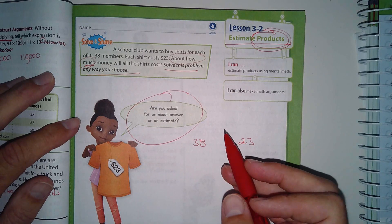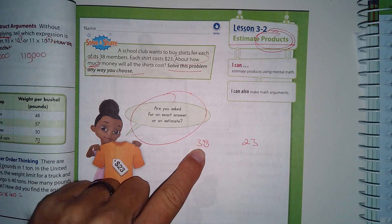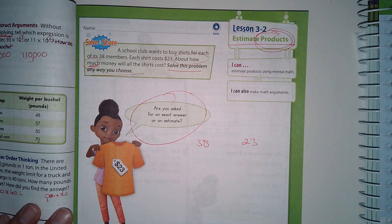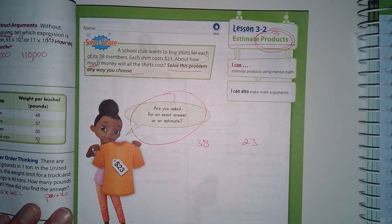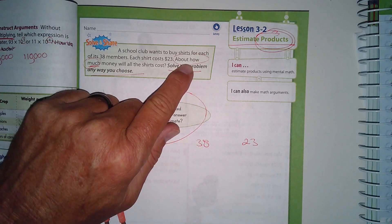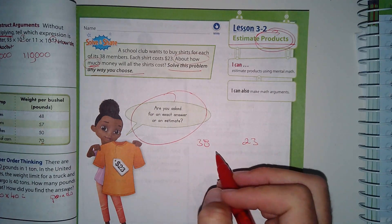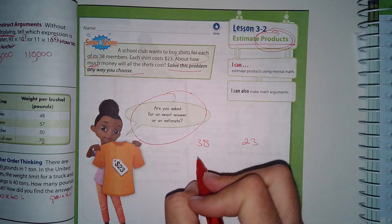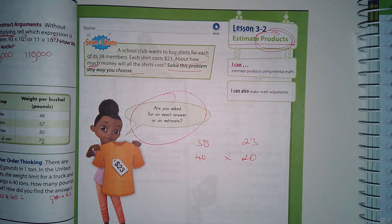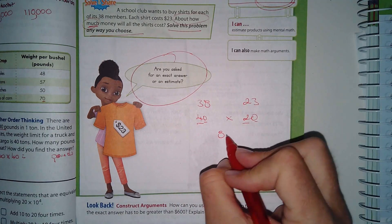Here they're talking about buying shirts for a club. There's 38 members, I wrote that down, and each shirt is $23. It says solve this problem any way you choose. Are they asking for an exact answer or an estimate? Well, it's an estimate because it says about how much. So if you were to estimate just in the top of your head, I think I'd probably call 38 forty times 23, I could just call this 20.